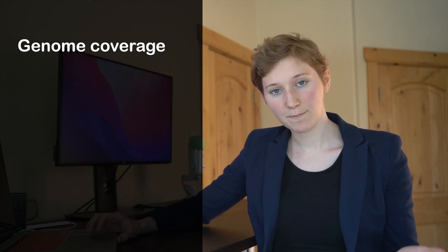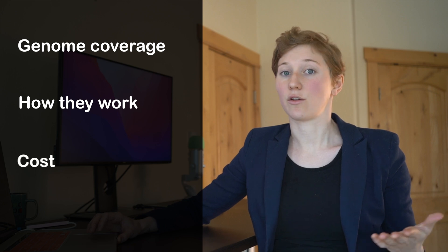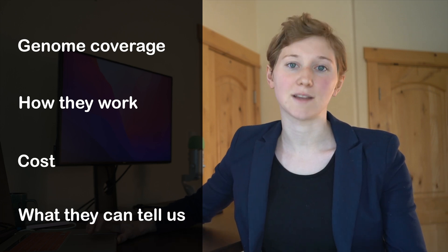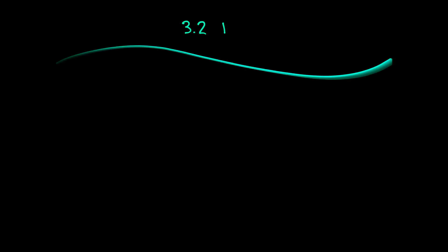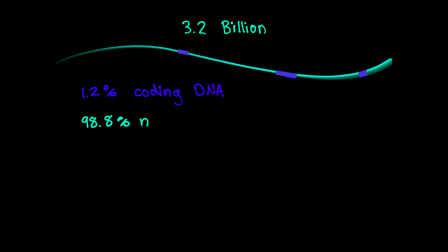I'm going to compare these three on how much of the genome they cover, how they work, their cost, and what they can tell us. First, we need to do a quick review. The human genome is 3.2 billion base pairs long. 1.2 percent are sequences that code for proteins, also called coding DNA. The rest is non-coding DNA that sits between coding sequences. Genes are actually composed of both coding DNA and non-coding DNA.